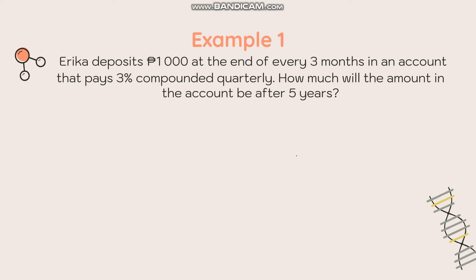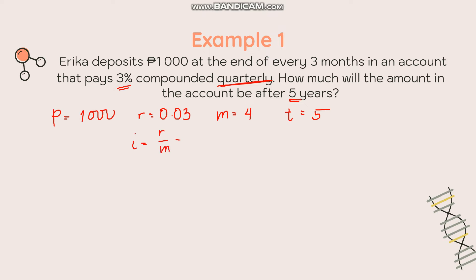Let's identify the values: P = 1,000; r = 0.03 (3% interest rate); m = 4 (quarterly compounding); t = 5 years. We then solve for i = r/m = 0.03/4 = 0.0075, and n = t × m = 5 × 4 = 20.